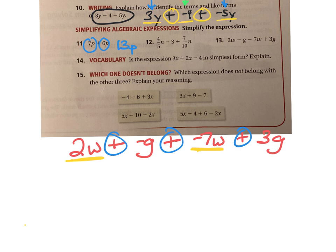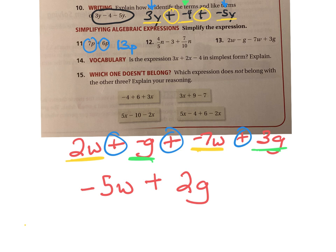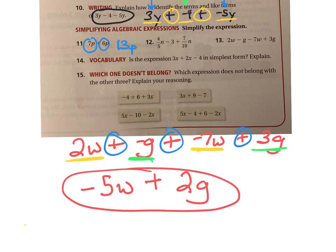I have to find the ones that are like. This one has a w — does anyone else have a w? This one has a w. The other two have g's. So let's put the like terms together. If I have 2w and a negative 7w, that gives me a negative 5w. And then negative g plus 3g gives me a positive 2g.